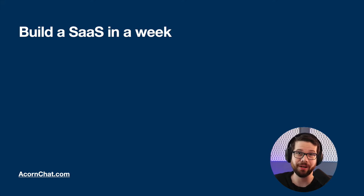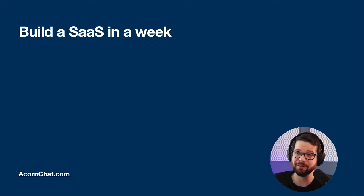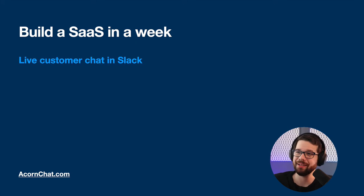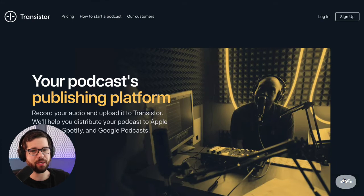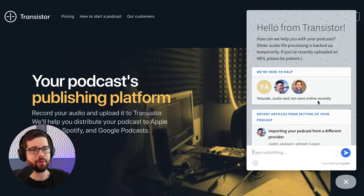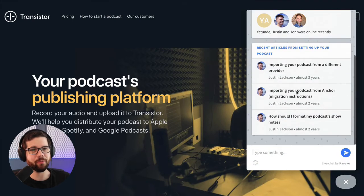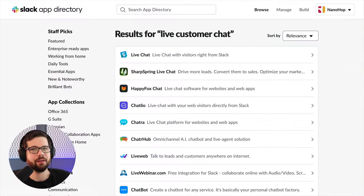All right, so I'm going to try to build a SaaS in a week, which is a total experiment. This may or may not be a terrible idea, but we'll see how it goes. It's going to be a live customer chat app that goes directly to Slack. Here's an example on the Transistor homepage — you pop it up, you get some information from their knowledge base, and then you can chat, which goes live to them.